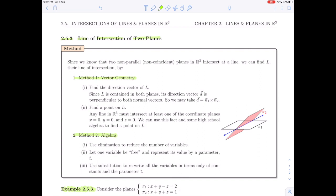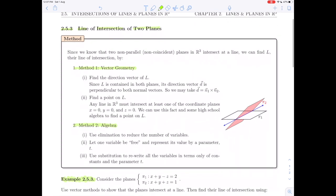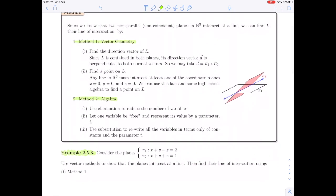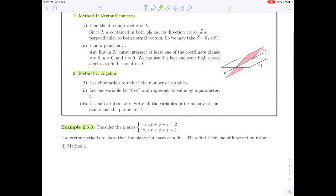Let's go ahead and read example 2.5.3. We're given two planes here and we're asked first to use vector methods to show that the planes intersect at a line. And once we've done that, then we'll use method 1 to find that line of intersection.